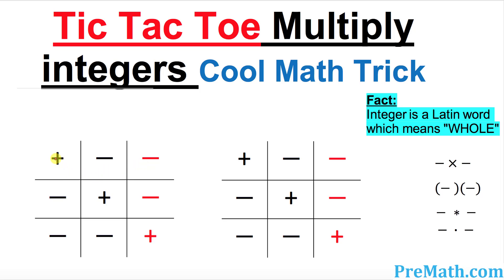If you look at the tic-tac-toe, along the diagonal only positive signs are placed. The rest are negative signs. Next, we're going to see how positive and negative signs work when it comes to multiplication.